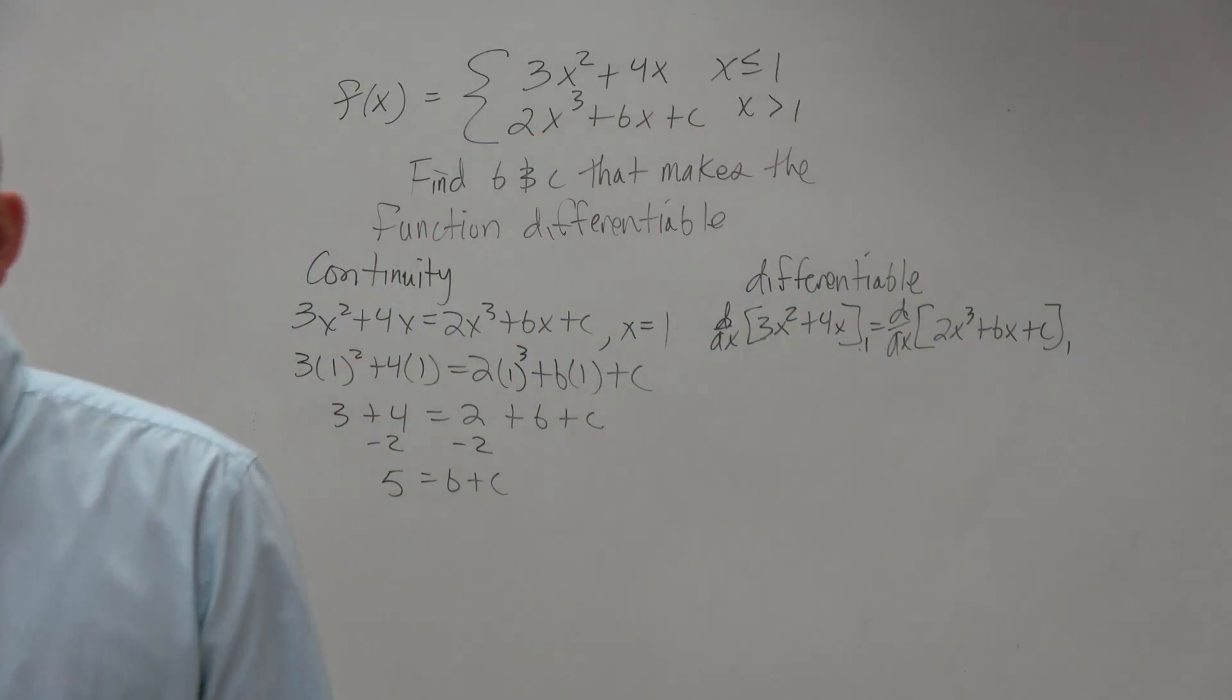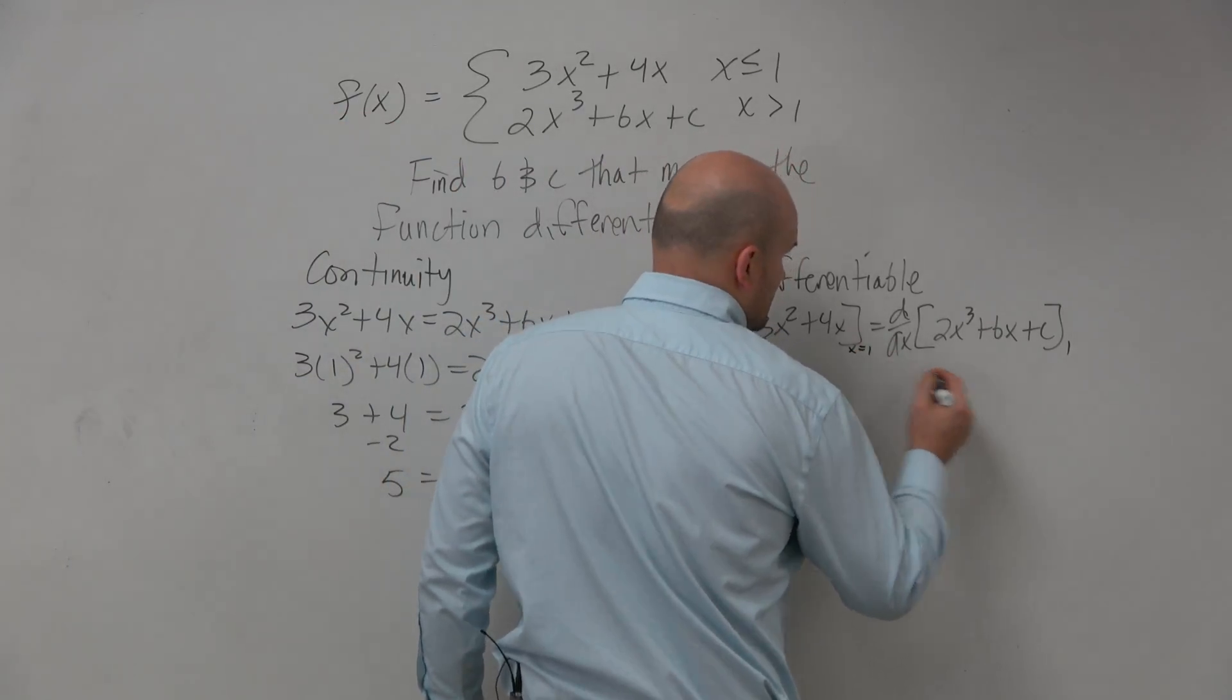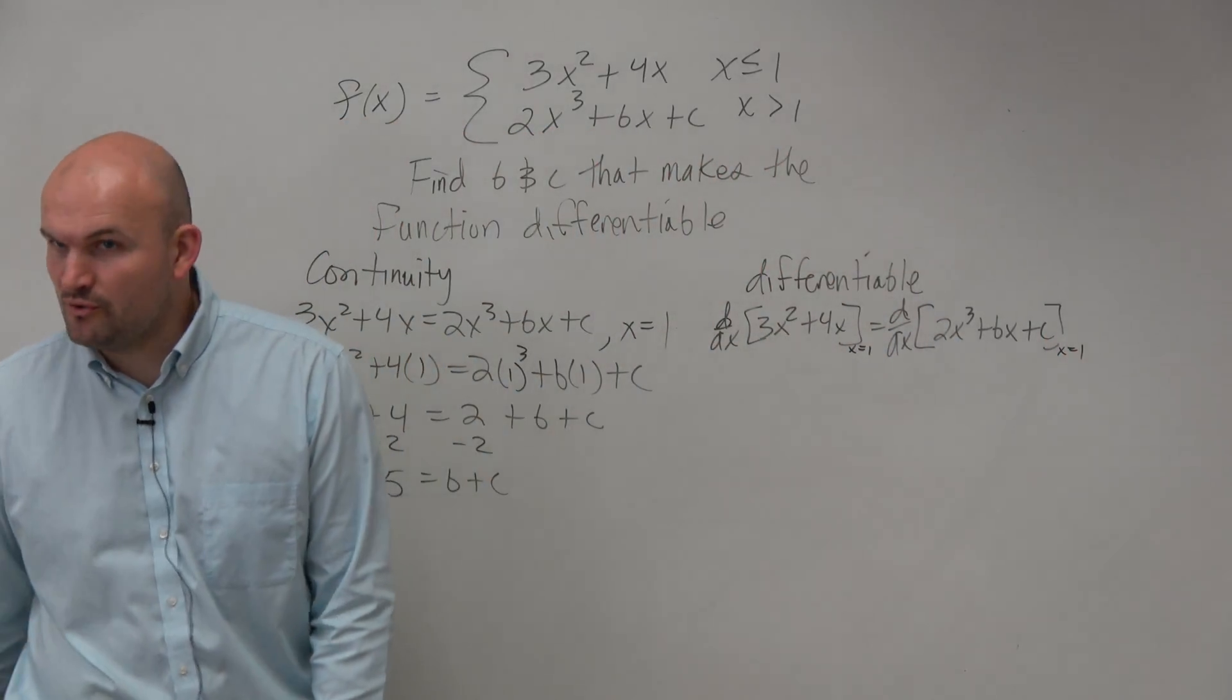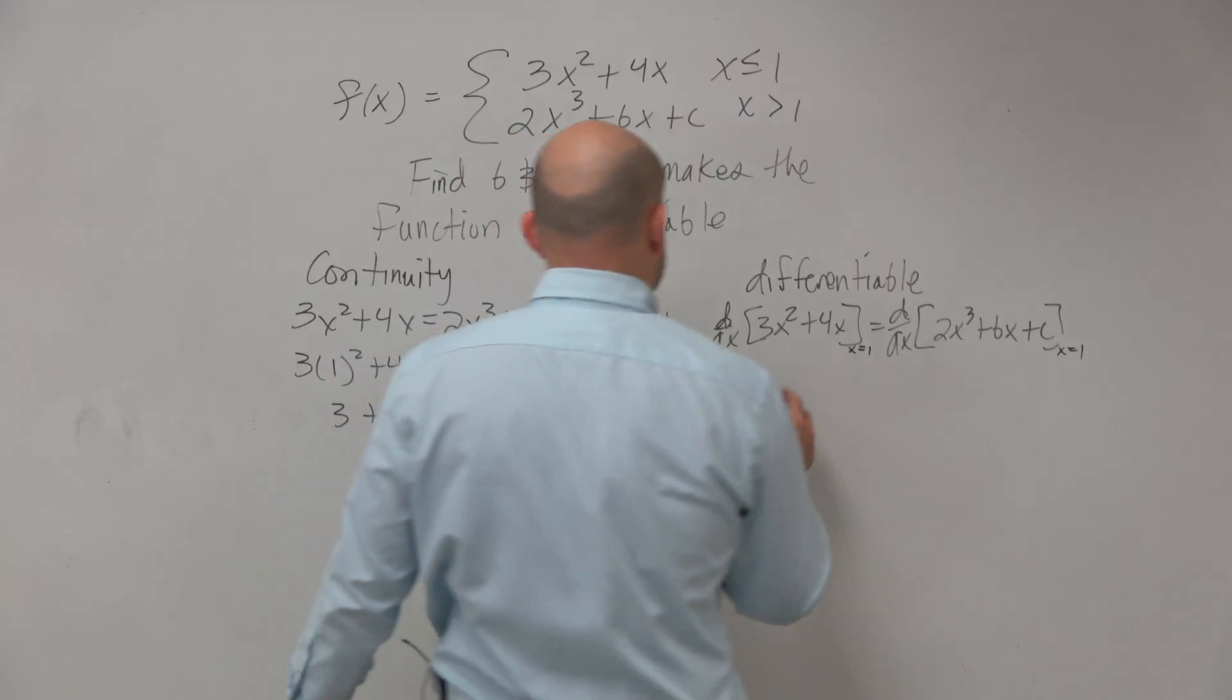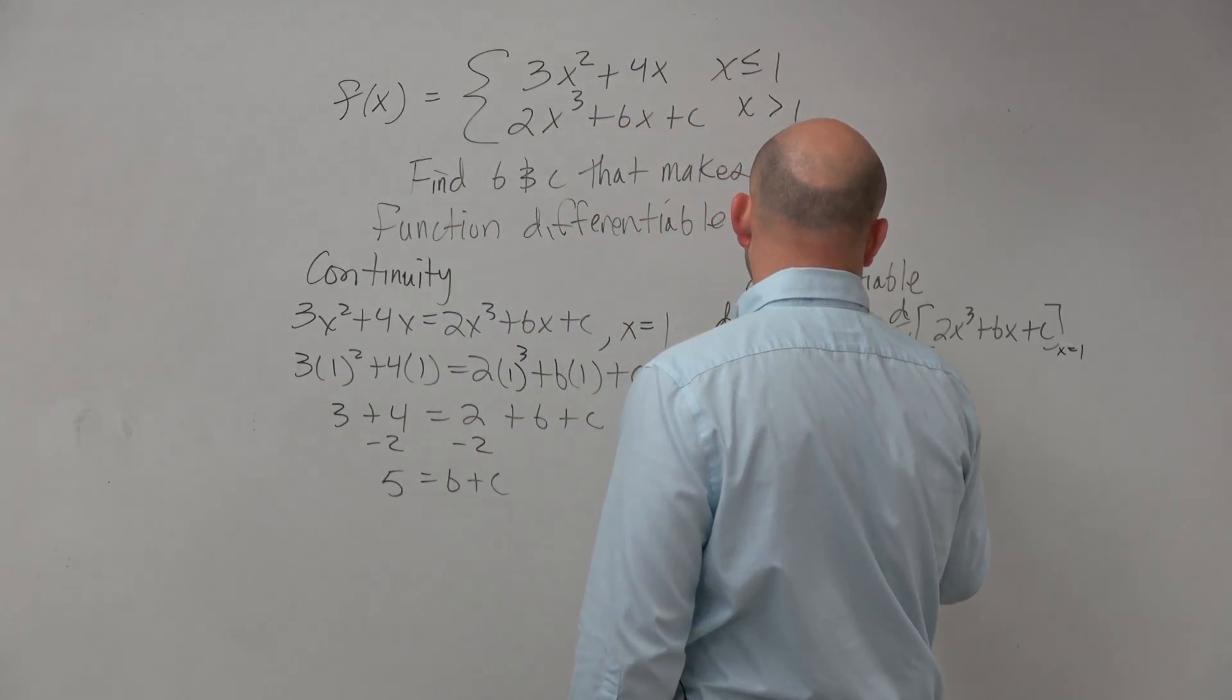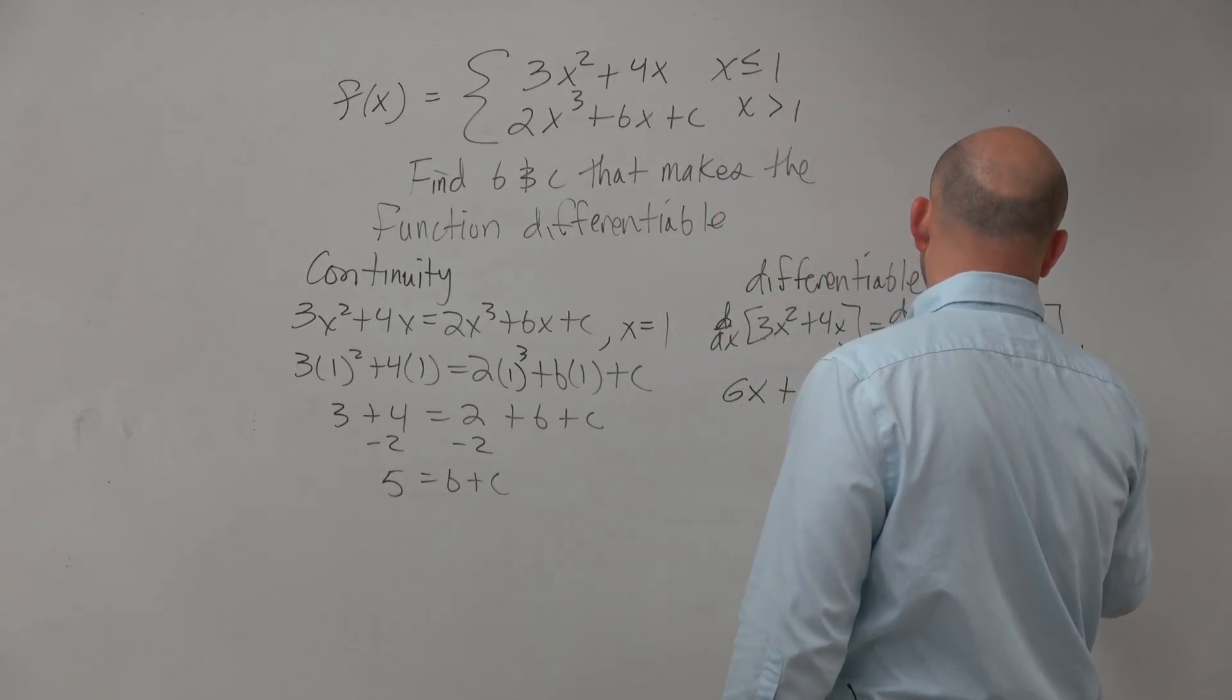Basically, that's just a notation of showing that the derivative on both of those sides has to be able to equal at x equals 1. Just giving you guys a little bit more formal definition or showing the work. So basically, we're going to take the derivative of both sides and then evaluate at x equals 1, right? So taking the derivative here, we have 6x plus 4 has to equal 8x squared plus b.